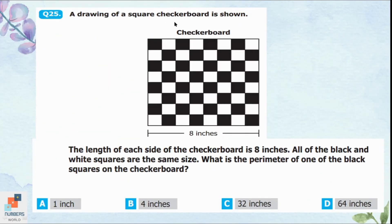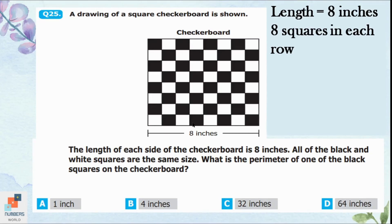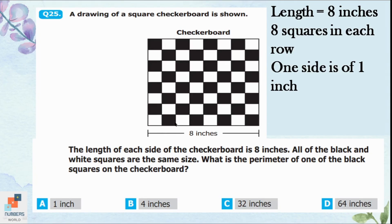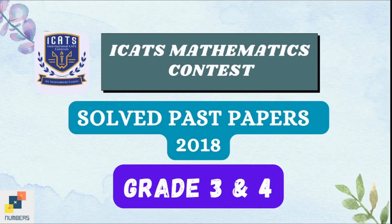Question 25: A square checkerboard has each side measuring 8 inches, with all black and white squares the same size. What is the perimeter of one black square? Since there are 8 squares in one row and each side of the checkerboard is 8 inches, each small square has a side of 1 inch. With four sides, the perimeter is 4 times 1 equals 4 inches — option B. Thanks for watching; please like, comment, and subscribe to the channel.